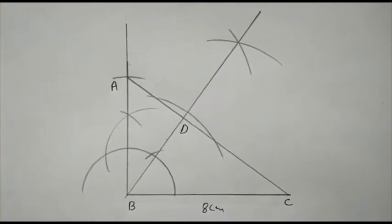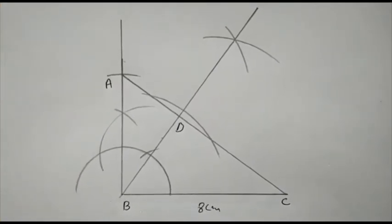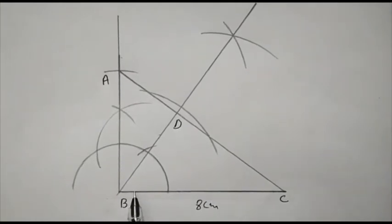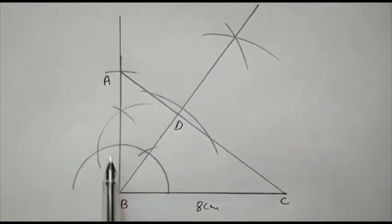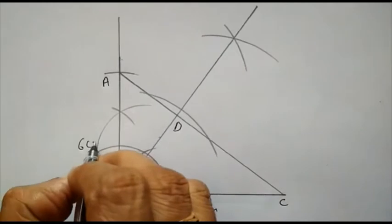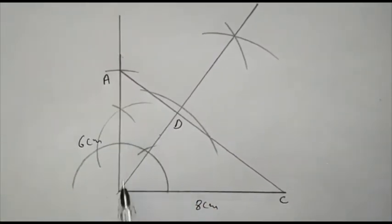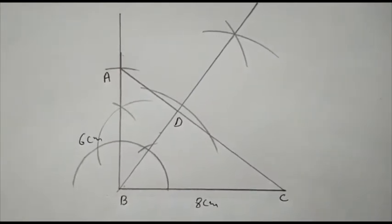According to the given condition, first we have drawn a right triangle: BC 8 centimeters, angle B 90 degrees, and AB is 6 centimeters. Join AC. So we have a right triangle ABC with angle B equal to 90 degrees.